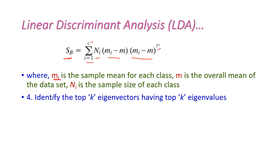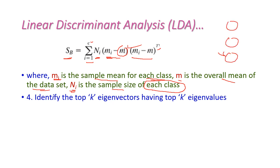Next, let us compute SB. SB is the summation from i equals 1 to C of Ni times (Mi minus M) times (Mi minus M) transpose, where Mi is the sample mean for each class, M is the overall mean of the dataset, and Ni is the sample size of each class. So if we have five classes, we compute the size and mean of each class and the overall mean of the entire dataset. The fourth step is to identify the top K eigenvectors having the top K eigenvalues.